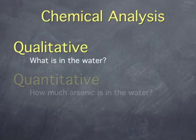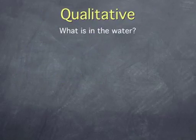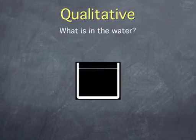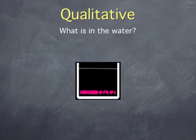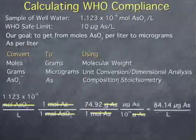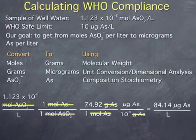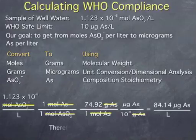Below you will see how chemists use qualitative analysis to determine the form arsenic takes in the drinking water. We will also use various quantitative analysis techniques to determine the amount of arsenic in the water, letting us find out if the water is safe to drink.